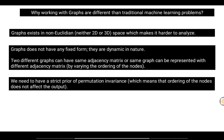Because graphs exist in a non-Euclidean space and don't have a fixed form, we need a strict notion of permutation invariance — meaning the ordering of nodes should not affect the output. Permutation-invariant functions like sum or average satisfy this: swapping two numbers doesn't change the result. That's why we use permutation-invariant functions when working with graphs.